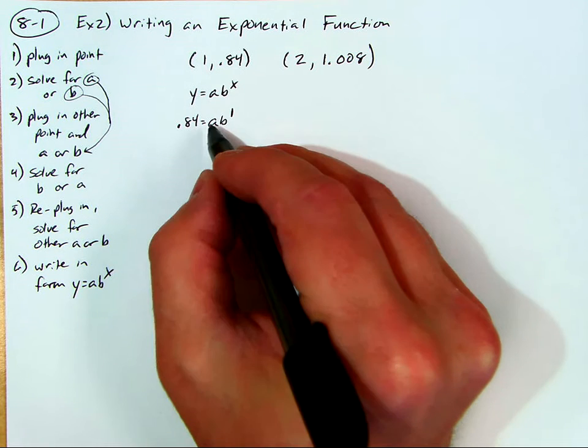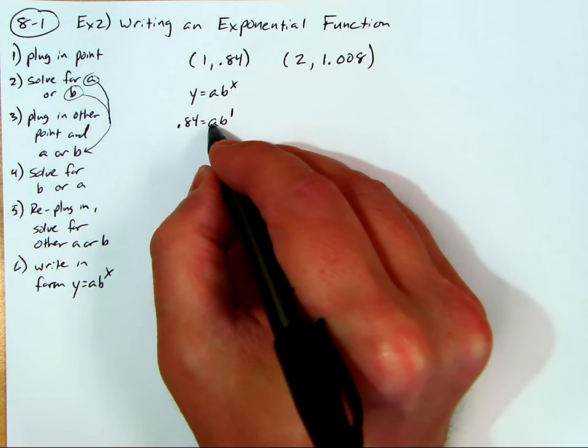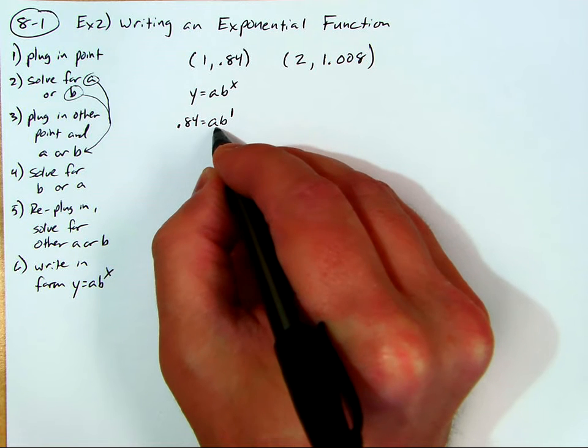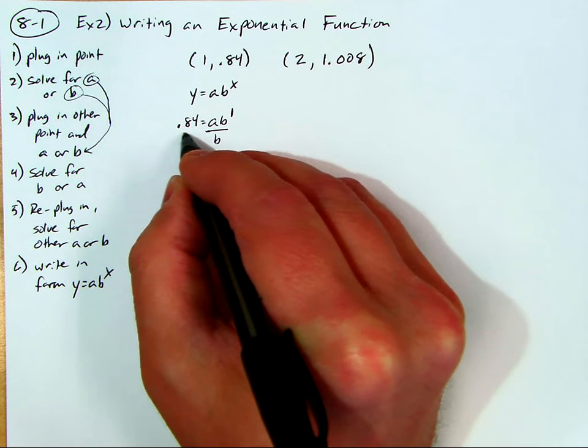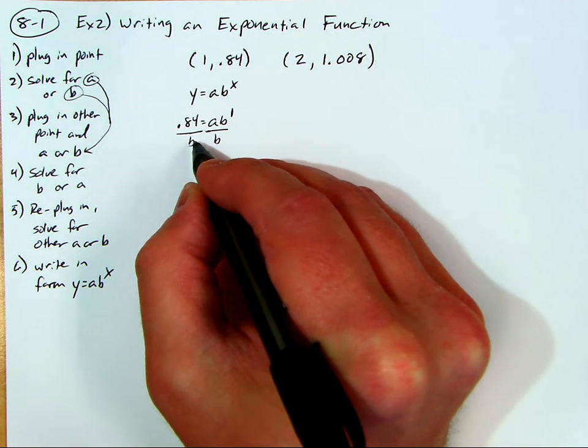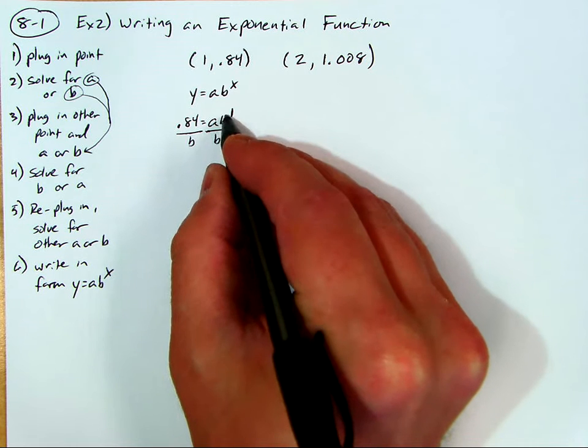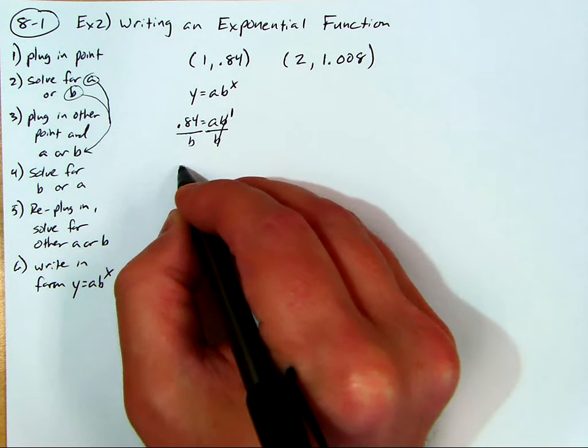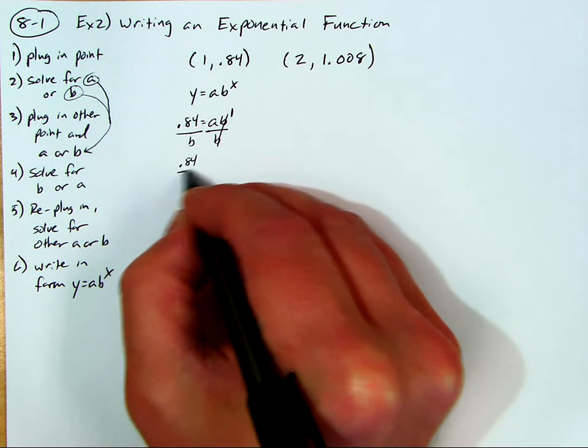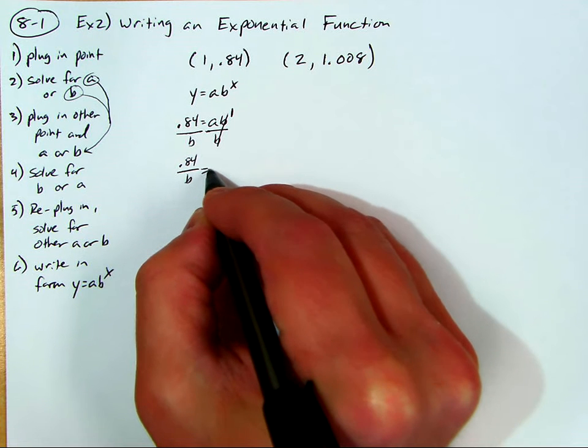Now I'm going to solve for a. I don't know, I just chose a. So solve for a, this is a times b. I'm going to divide both sides by b. That gives me, because these two cancel out here, because b to the first is just b. So a is equal to 0.84 over b.